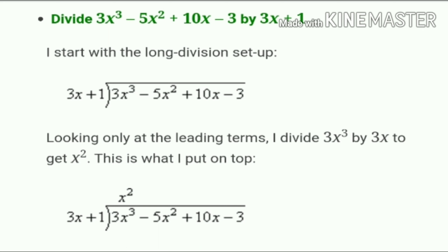Now let's work through a new example: divide 3x³ - 5x² + 10x - 3 by 3x + 1. To start the long division, I look only at the leading terms. I divide 3x³ by 3x to get x². This x² goes on top of the division bracket.